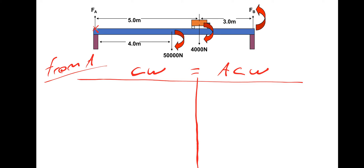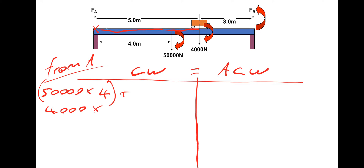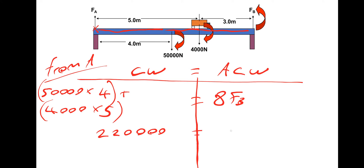Moving from left to right, the first force is 50,000 newtons going clockwise, so 50,000 times the distance from the pivot FA, which is 4 metres. The next one is 4,000 newtons, also going clockwise, so plus 4,000 times 5 metres. This equals FB going anticlockwise, so FB times 8 metres. So 50,000 times 4 plus 4,000 times 5 gives 220,000 equals 8 times FB.